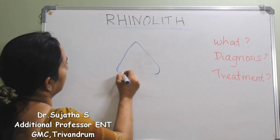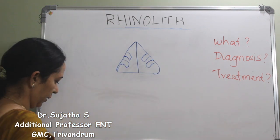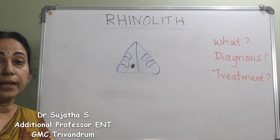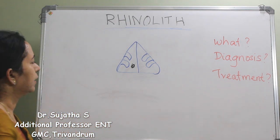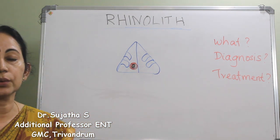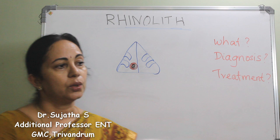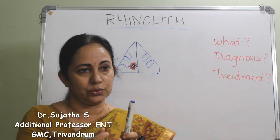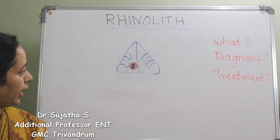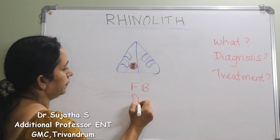If there is a foreign body inside the nose, layers of mucus get collected around it. Because of the turbulent air currents in the nose, layers of mucus accumulate around the foreign body, which later get deposited with calcium and magnesium salts. So the foreign body becomes a laminated structure — a partially or totally calcified mass within the nose, either around a foreign body nidus or developing de novo.